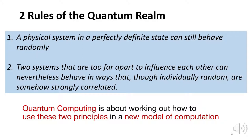First, a physical system in a perfectly definite state can still behave randomly. This is due to superposition — the system can be in two states simultaneously.